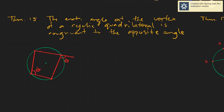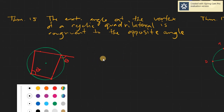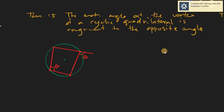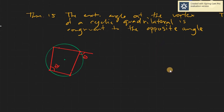Assalamualaikum warahmatullahi wabarakatuh. Good day again everyone. Today we will be discussing Theorem number 15: the external angle at the vertex of a cyclic quadrilateral is congruent to the opposite angle.